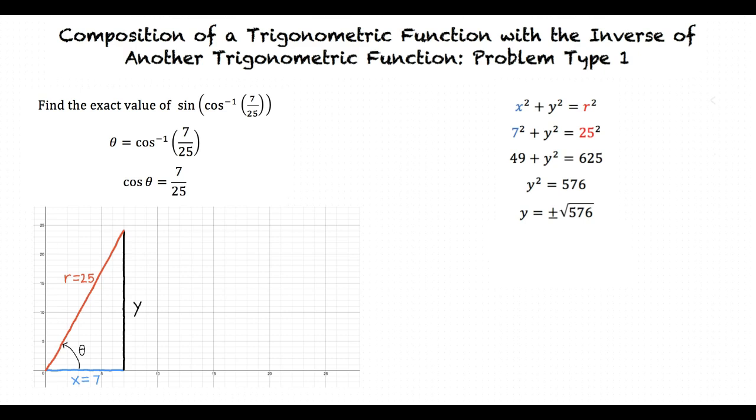And since the triangle is in the first quadrant, the y-coordinate must be positive. So y is equal to the square root of 576, which equals 24. Now let's substitute y back into our original problem.